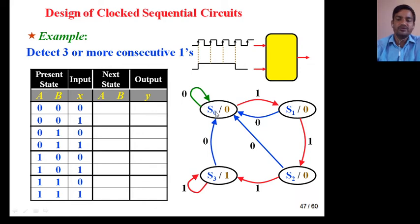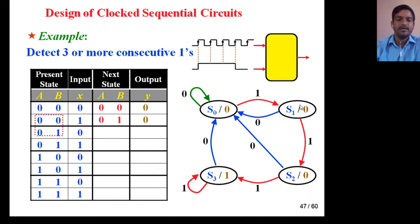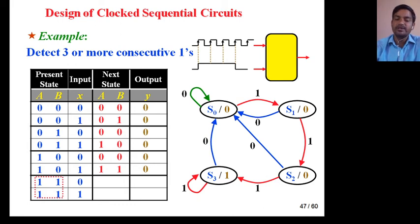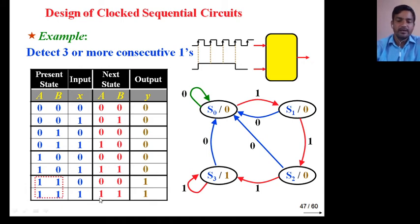Now write down the next state. S0 at x equals 0 goes to 00, and output is 0. At x equals 1, S0 goes to S1, which is 01. Similarly, at state 01, x equals 0 goes to 00 and output is 0; x equals 1 goes to 10. At state 10, x equals 0 goes to 00; x equals 1 goes to 11. At state 11 with x equals 0 it goes to 00 and output is 1. This is an example of a Moore machine, because the output depends only on the state.